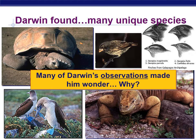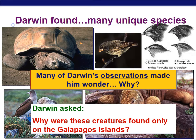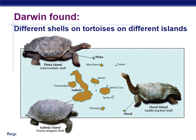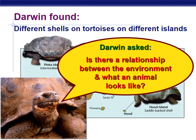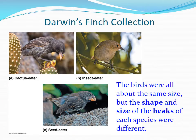Many of Darwin's observations made him wonder why these creatures were found only on the Galapagos Islands. He also discovered that depending on the island, giant tortoises have a different shell — the governor of the Galapagos could tell what island each tortoise came from based strictly on its shell. The question was why, and whether there is a relationship between the environment an animal lives in and what it looks like. The answer is yes.